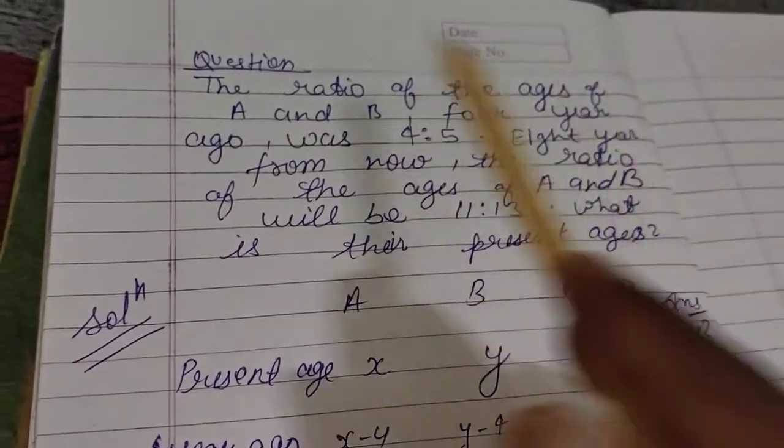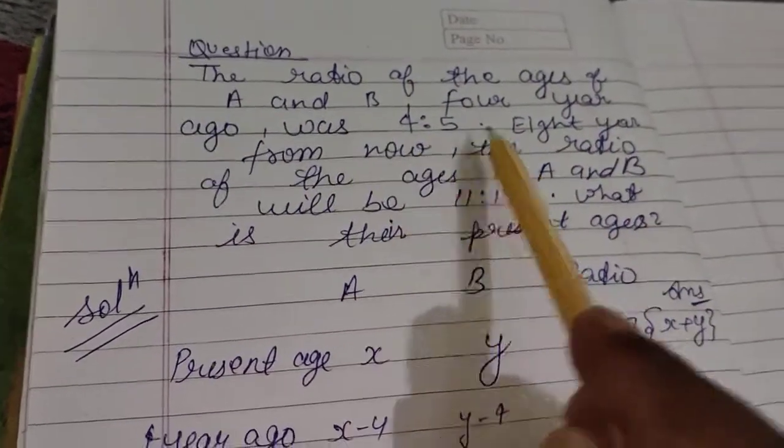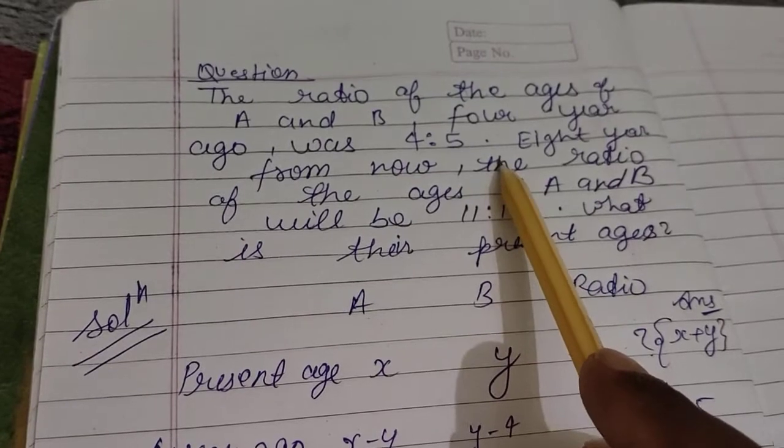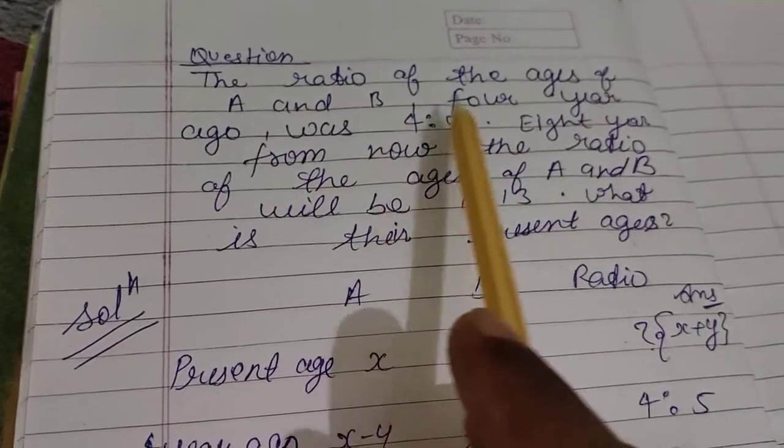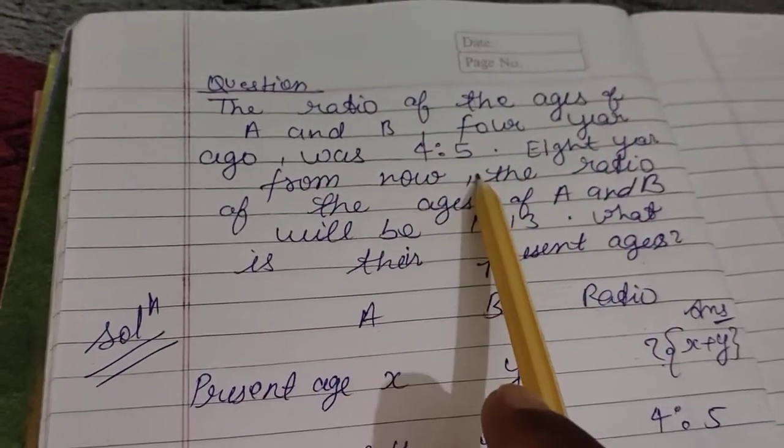The ratio of the ages of A and B four years ago was 4:5.